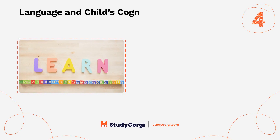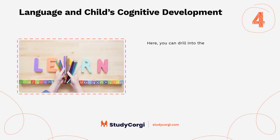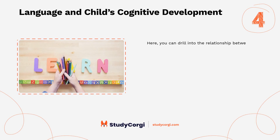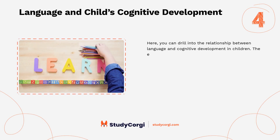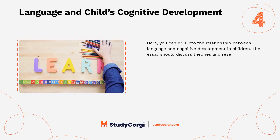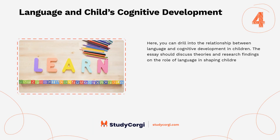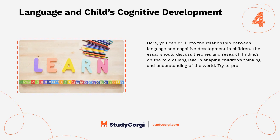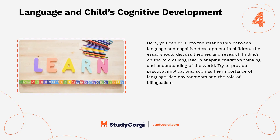Language and child's cognitive development. Here you can explore the relationship between language and cognitive development in children. The essay should discuss theories and research findings on the role of language in shaping children's thinking and understanding of the world. Try to provide practical implications such as the importance of language-rich environments and the role of bilingualism in cognitive development.